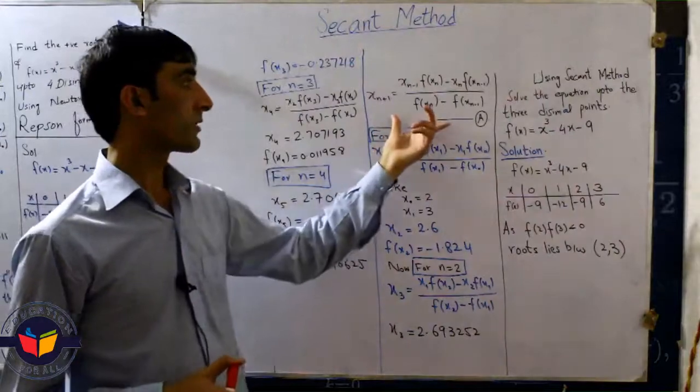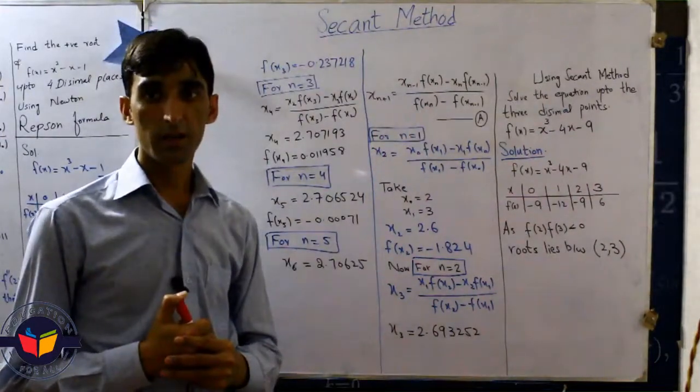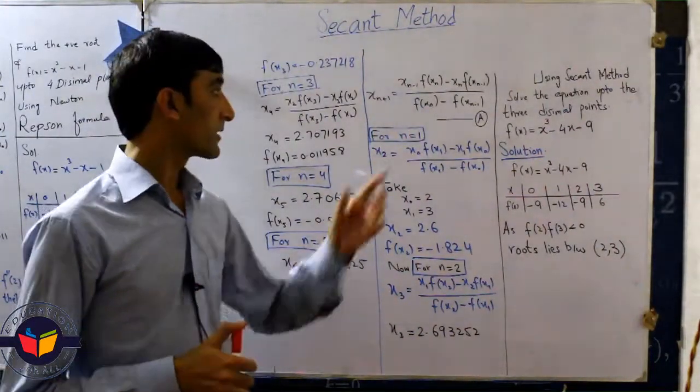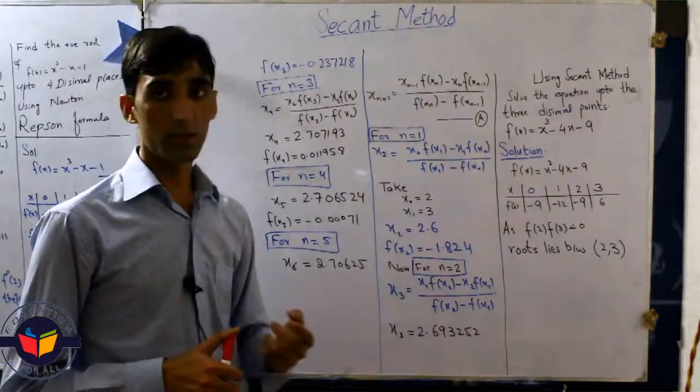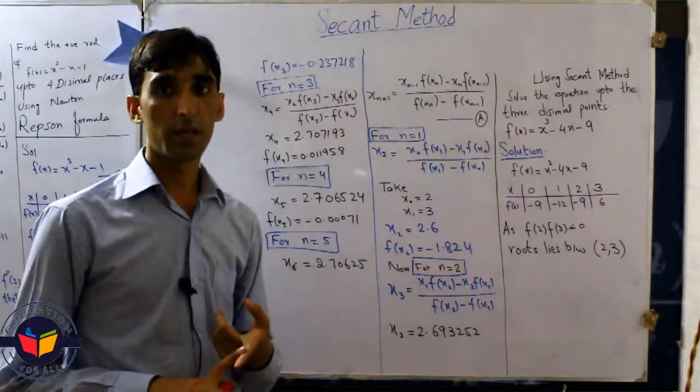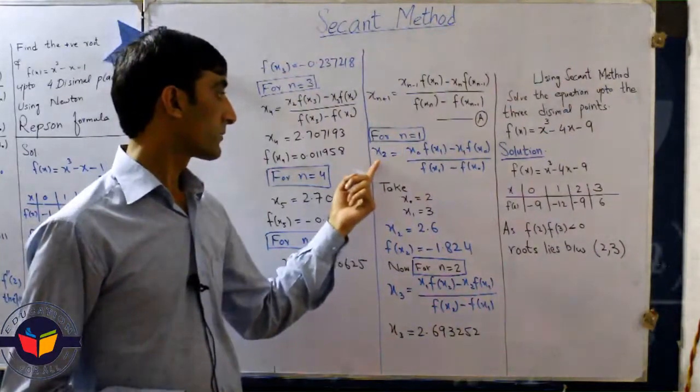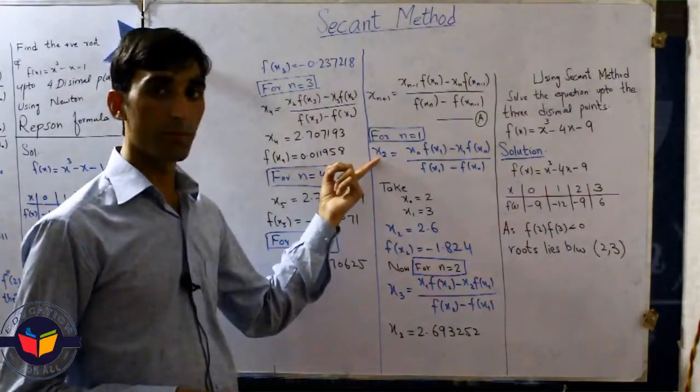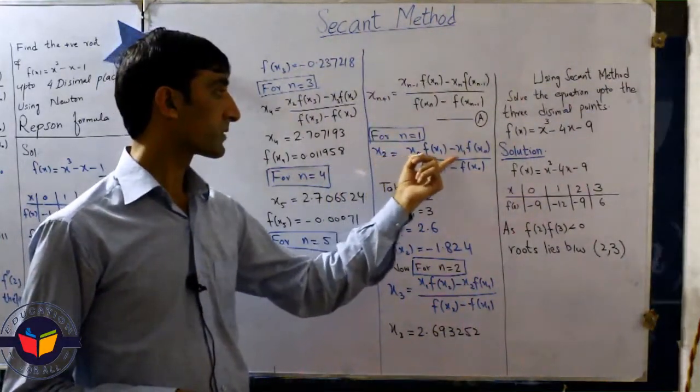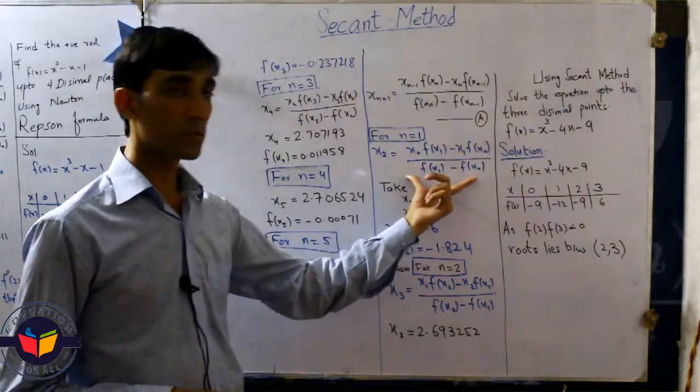Now students, this is the formula for the secant method. And if we substitute n equal to 1, we always start n equal to 1 in this method. We write x2 equals x0 f of x1 minus x1 f of x0 over f of x1 minus f of x0.